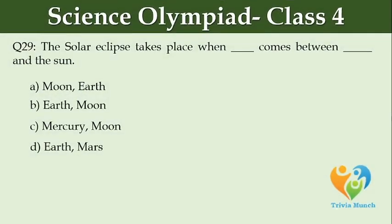The solar eclipse takes place when blank comes between blank and the sun: Option A: Moon, Earth; Option B: Earth, Moon; Option C: Mercury, Moon; Option D: Earth, Mars.